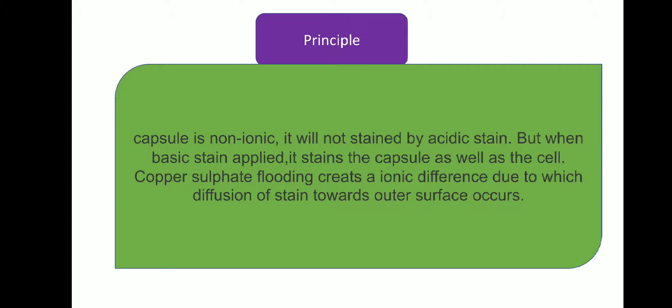Principle: Capsule is non-ionic. Therefore, it will not be stained by acidic stain. But when basic stain, i.e. crystal violet, is applied, it stains the capsule as well as the cell. Copper sulphate flooding creates an ionic difference due to which the diffusion of the stain towards the outer surface of the cell occurs.